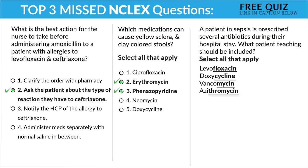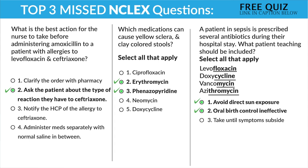Once we know that, the options are easier. Option one: avoid direct sun exposure — yes. Number two: oral birth control is ineffective — yes, that's correct. Number three: take until symptoms subside — no. A big thing with antibiotics: we take the entire medication, finish the full course, and we do not stop when we're feeling better. Number four: monitor QT intervals — yes, for azithromycin, which prolongs those QT intervals. Number five: supplement with vitamin B6 — no, that's usually for INH, a TB medication.